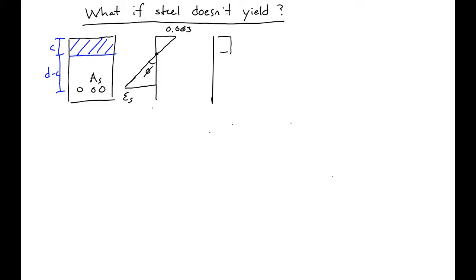We can draw our stress diagram. We're going to assume a rectangular stress block like we did before, with 0.85 f'c being the magnitude of the stress and the depth being β₁ times C. The stress in our steel will be fs, so the force in our steel will be As times fs.